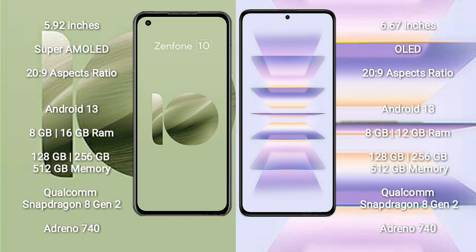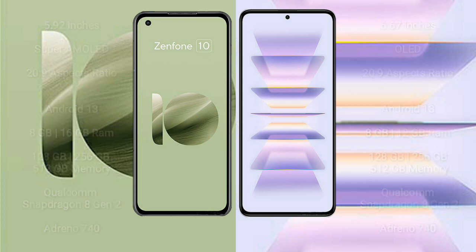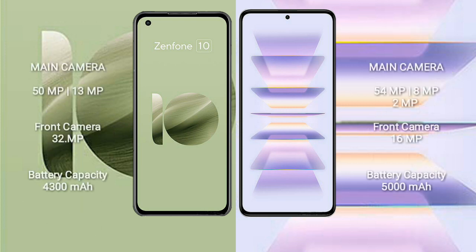Redmi K60 Pro is also powered by a Qualcomm Snapdragon 8 Gen 2 processor with an Adreno 740 GPU. Asus Zenfone 10 has a rear dual-camera setup of 50MP plus 13MP and a 32MP front camera. Redmi K60 Pro has a rear triple-camera setup of 54MP plus 8MP plus 2MP and a 16MP front camera.